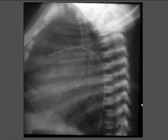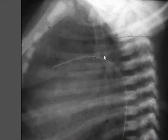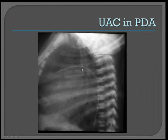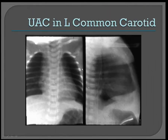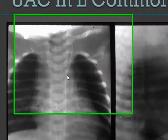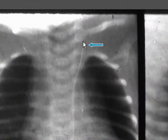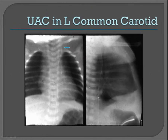Now we'll talk about some malpositions of UACs. You can see that this UAC comes all the way up and takes a turn into the patent ductus arteriosus here. This is another example of a UAC that's come a little bit too high — here we can see it coming up the aorta and ending in the left common carotid artery in the neck. Here's the lateral view.